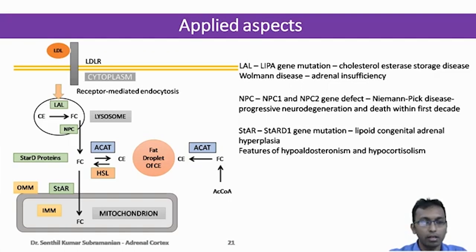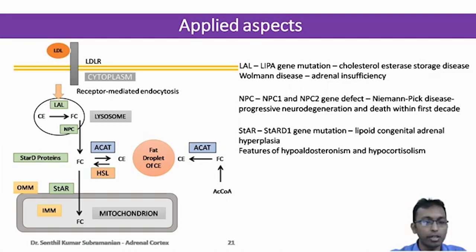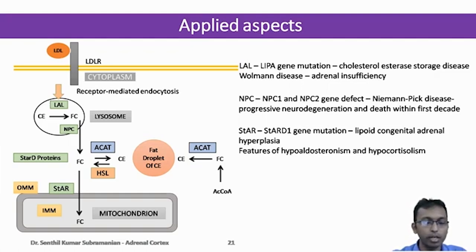The second defect can be in the NPC protein. This protein helps in the transport of free cholesterol from the lysosome to the cytoplasm. The defect in this protein leads to Niemann-Pick disease, with the characteristic feature of progressive neurodegeneration. It is very fatal and death occurs within the first decade. The next important protein is the StAR protein, which helps in the transport of cholesterol from outer to inner mitochondrial membrane.